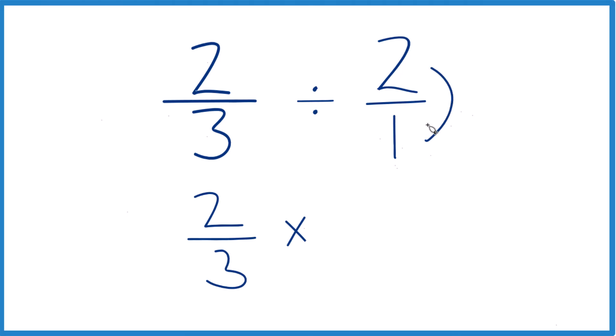So we take the numerator, move it to the bottom, the denominator goes to the top. So one over two, that's just one-half.